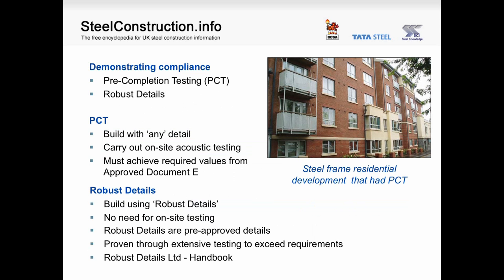There are two methods for demonstrating compliance with the regulations: pre-completion testing (PCT) and robust details. For PCT, the building may be constructed with any details the engineer deems appropriate, but on-site acoustic testing must be carried out at the pre-completion stage. For robust details, no pre-completion testing is required, but the building must be constructed using robust details — a series of pre-approved construction details based on extensive on-site testing. The robust details handbook is available from Robust Details Limited and includes details for many forms of construction including steel frames.